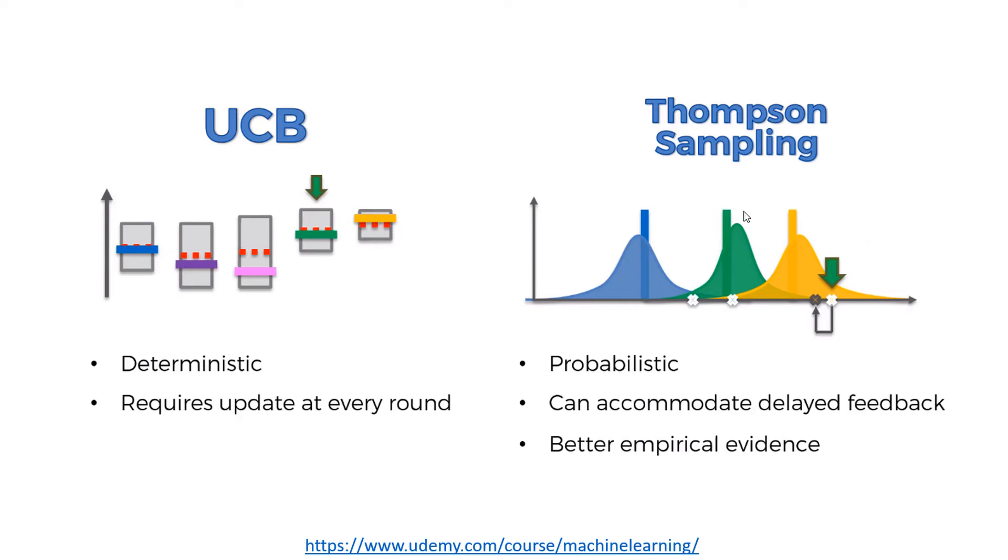You can keep exploiting and exploring at the same time as the clicks come in. So instead of having to update instantly at each click, you can delay the feedback. You can update your distributions once you've reached, let's say, 500 clicks. While if you do this here, you would have problems because you could be selecting maybe the best machine, or maybe the wrong machine, and you'd be losing money and exploration as well.